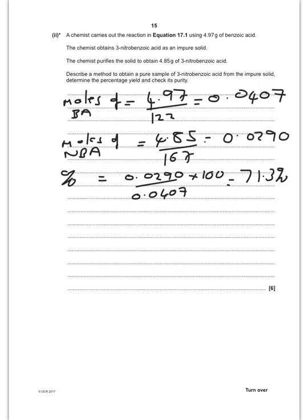which is just that mass divided by the molar mass. You then find the number of moles of 3-nitrobenzoic acid that you form. And then you just do that mole divided by that number times by 100 to give you 71.3%.